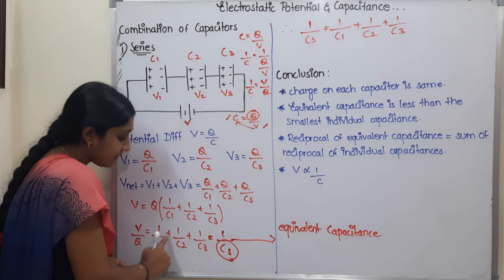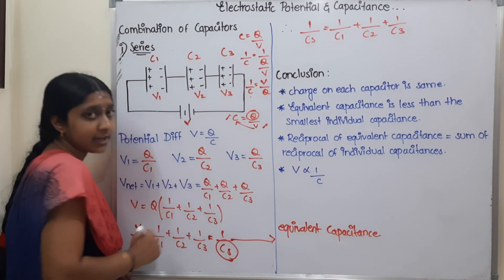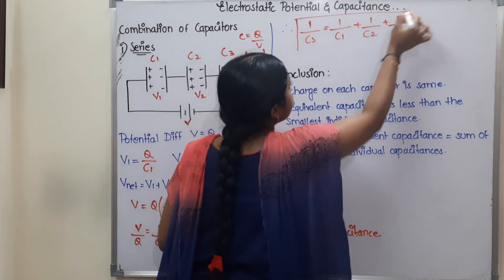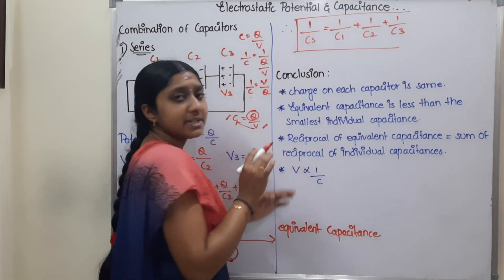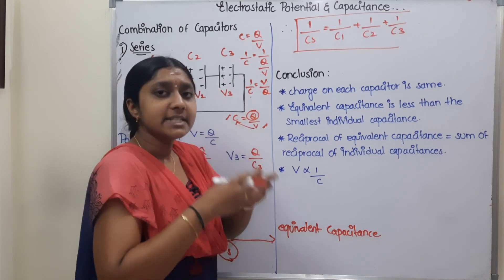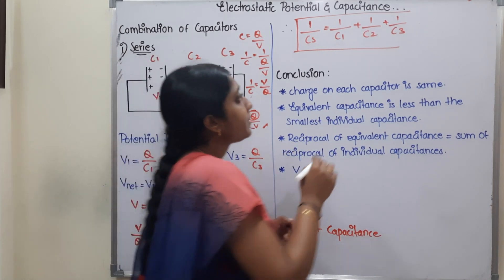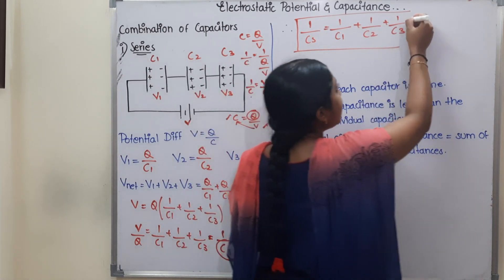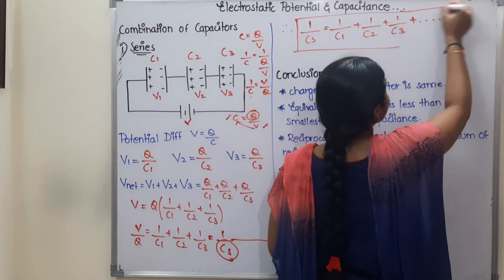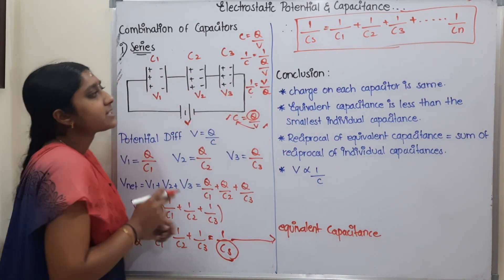In general, 1/Cs = 1/C1 + 1/C2 + ... + 1/Cn. This is the general formula for capacitors in series.